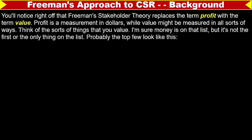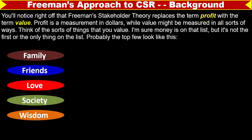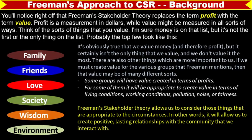Freeman's stakeholder theory replaces the term profit with the term value. Profit is measured in dollars while value might be measured in all sorts of ways. Freeman's approach replaces profit with value because profit is provided only to shareholders. This theory states that we should provide value to all stakeholders. Things we value include family, friends, love, society, wisdom, and environment. It's obviously true that we value money and therefore profits, but it certainly is not the only thing we value, and we do not value it the most.